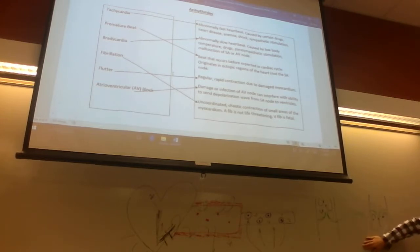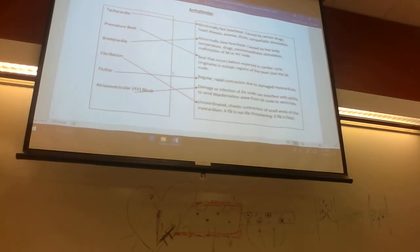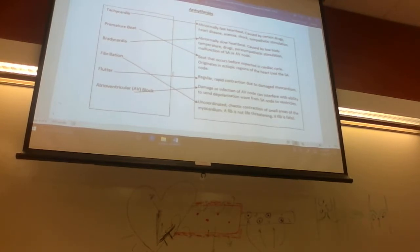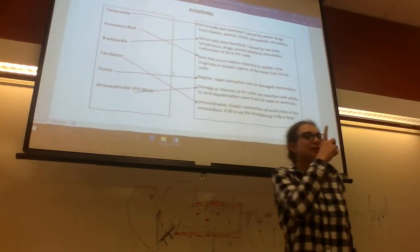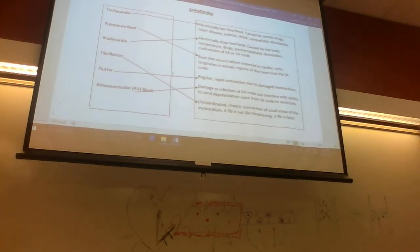Bradycardia is a slow heartbeat, caused by low body temperature, certain drugs, parasympathetic stimulation, or a malfunction of the SA node or AV node. A helpful way to remember it: think of 'Brady' running very slowly. Bradycardia and tachycardia are complete opposites.